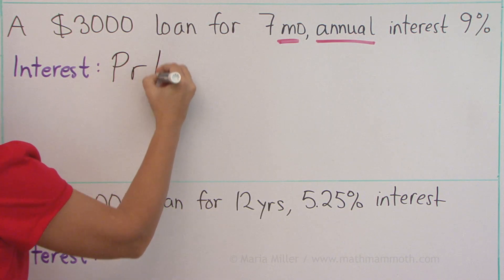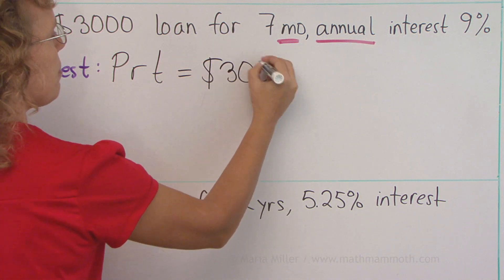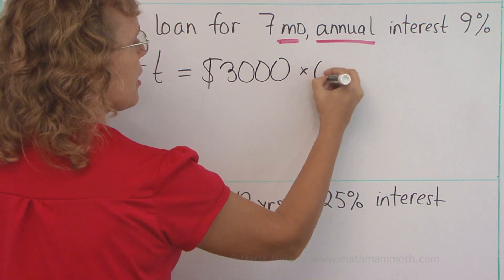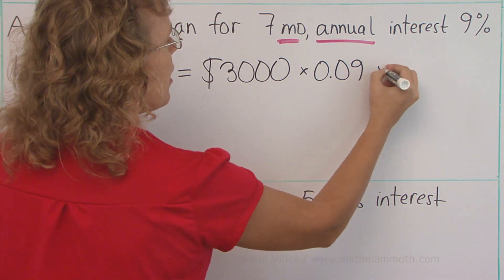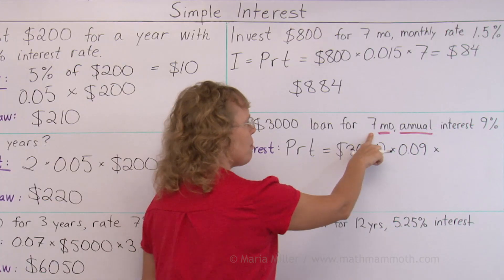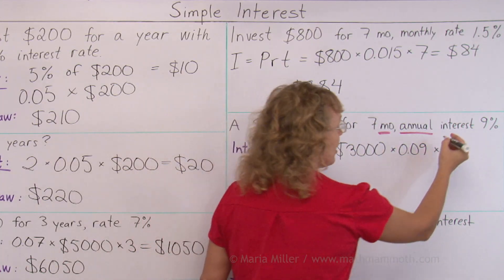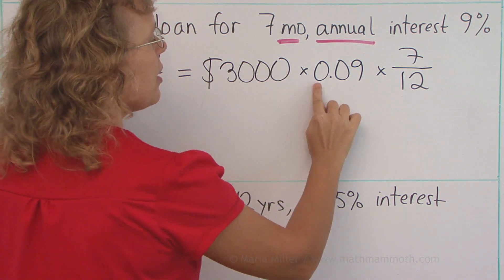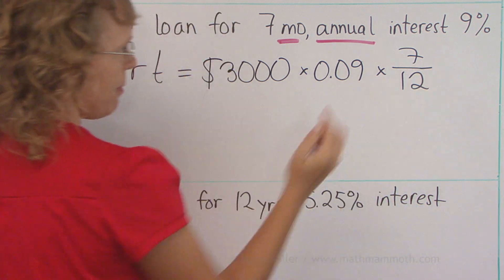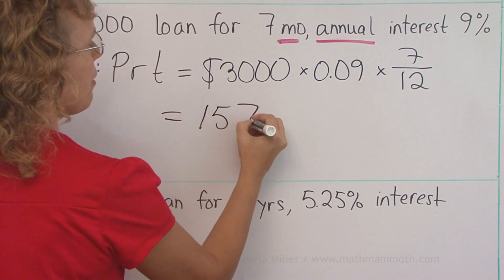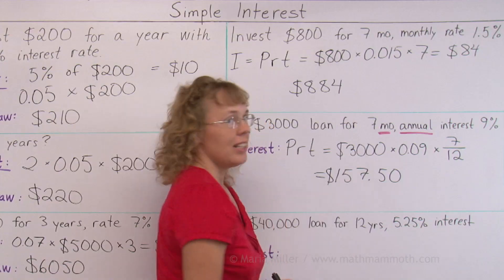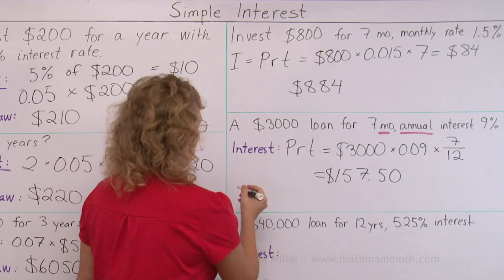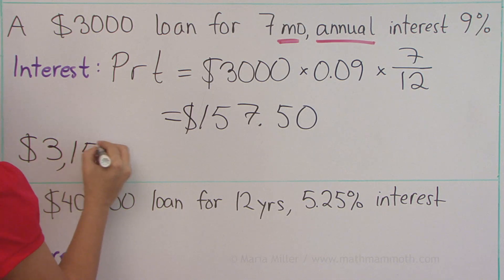Let's write it out. The interest is PRT: $3,000 times the interest rate of 9% annual, times the time. I'm going to change seven months to years — seven months is a fractional part of a year, specifically 7/12 of a year. Using a calculator: 3000 times 0.09 times 7, then divide that by 12. We get $157.50. This is a loan, so what you will pay back to the bank is your original principal plus this interest: $3,157.50.